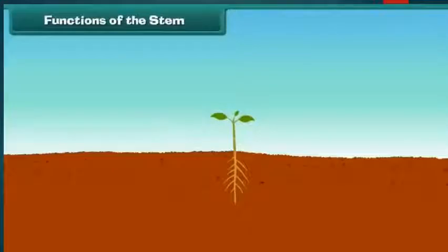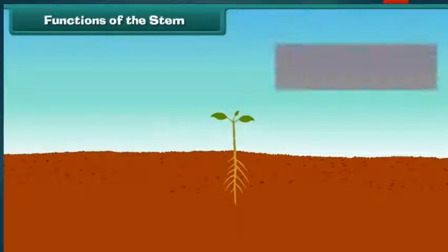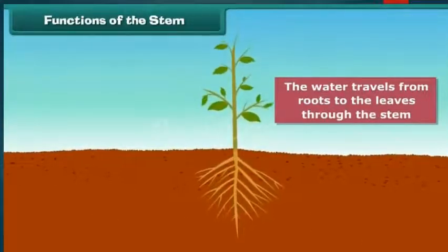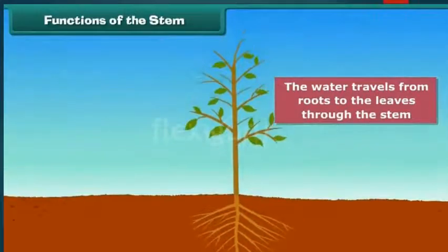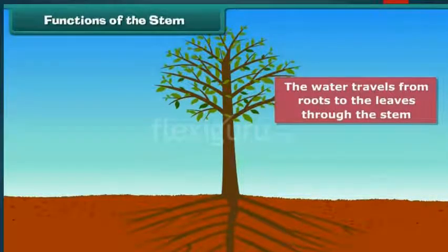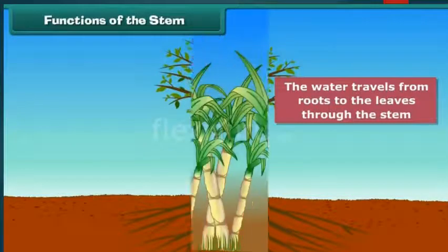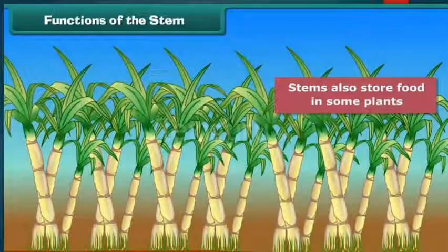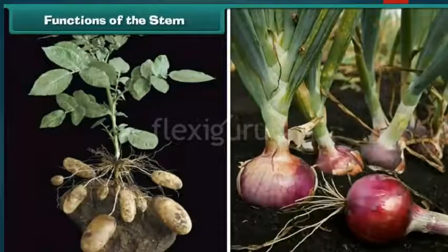The water taken in by the roots of the plant travels to the leaves through the stem. This water is used by the leaves to make food. The stem also carries food made by leaves to all parts of the body. Sometimes the food made by the leaves is stored in the stem, as in sugar cane. Other examples are potato and onion. We eat these stems and get nutrition.